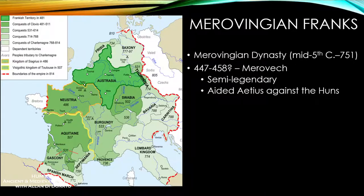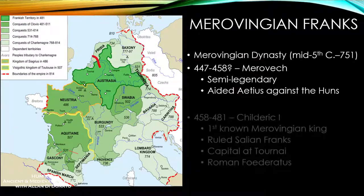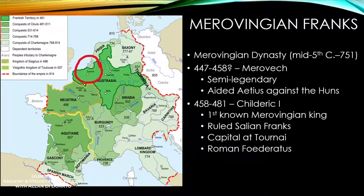Merovec seemed to have aided the Romans — General Aetius — against the Huns, but beyond that we can't say much. His son would be the first real Merovingian king, Childeric I, who reigned from 458 to about 481 and is historically verifiable. He was the ruler of the Salian Franks from the city of Tournai, and was also a Roman federatus, meaning he was one of Rome's allies at the time.